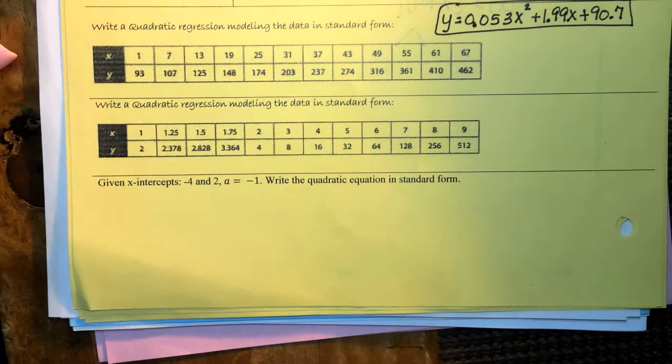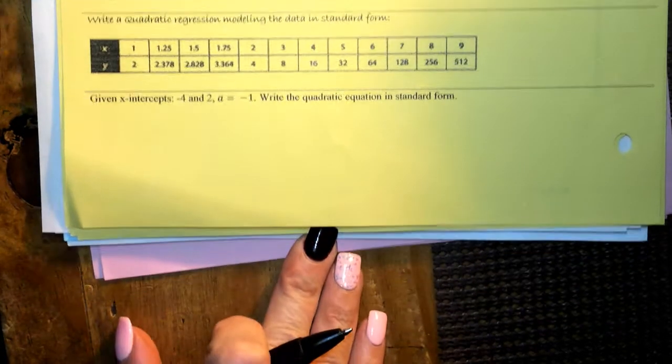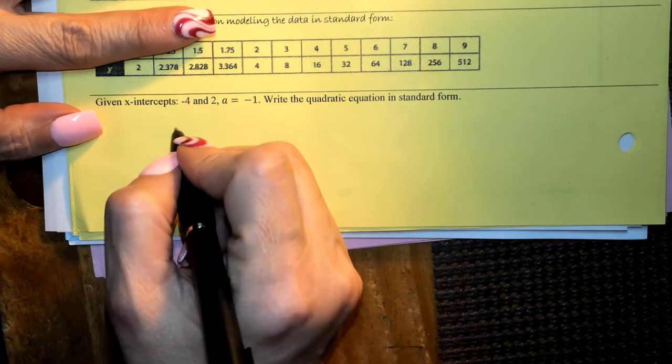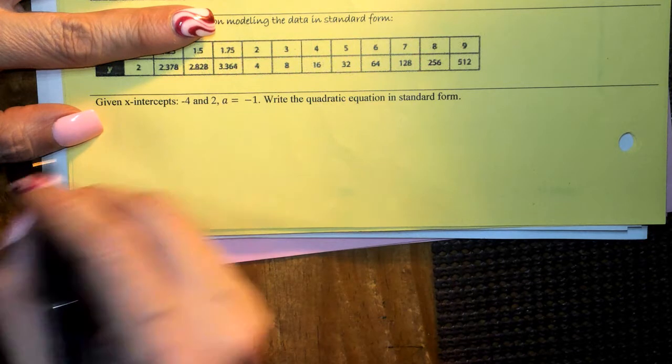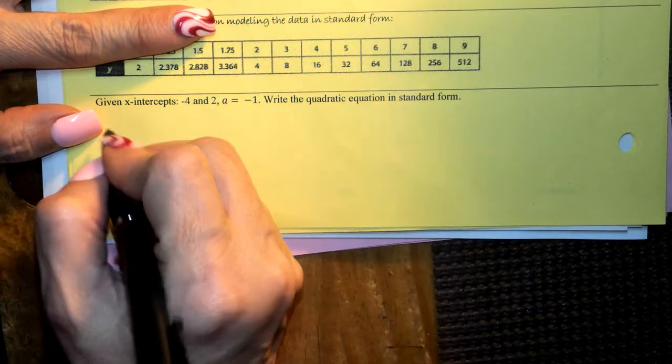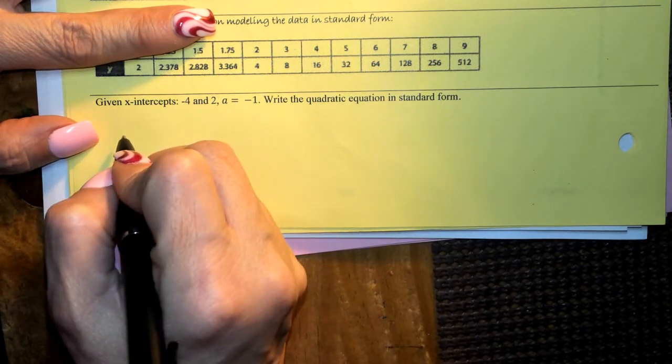All right, so you'll do the other one on there, and then we'll do the last one. Given the x-intercepts of negative 4 and 2 and an a value of negative 1, write the quadratic equation in standard form. So this is given it to us in vertex form.